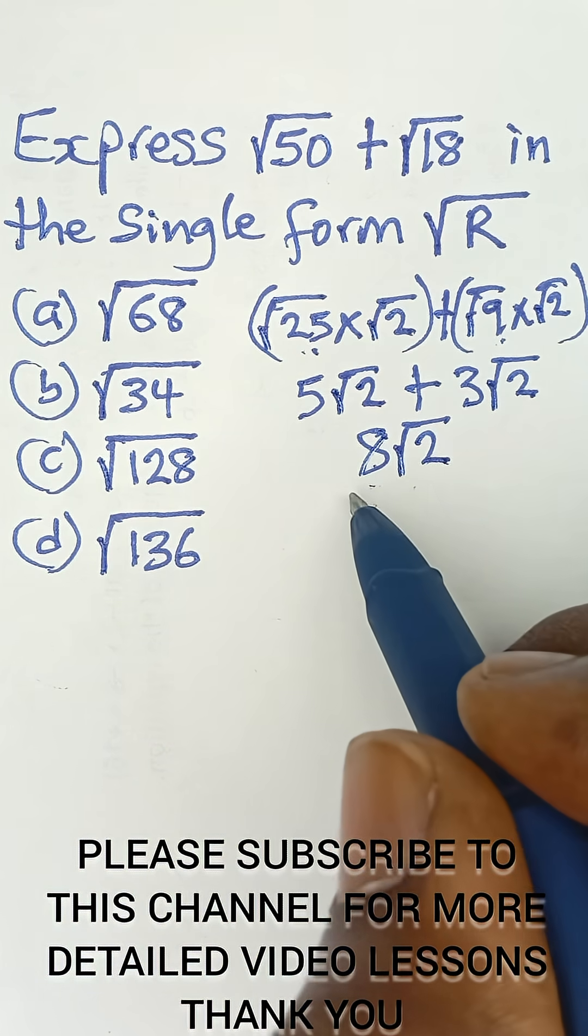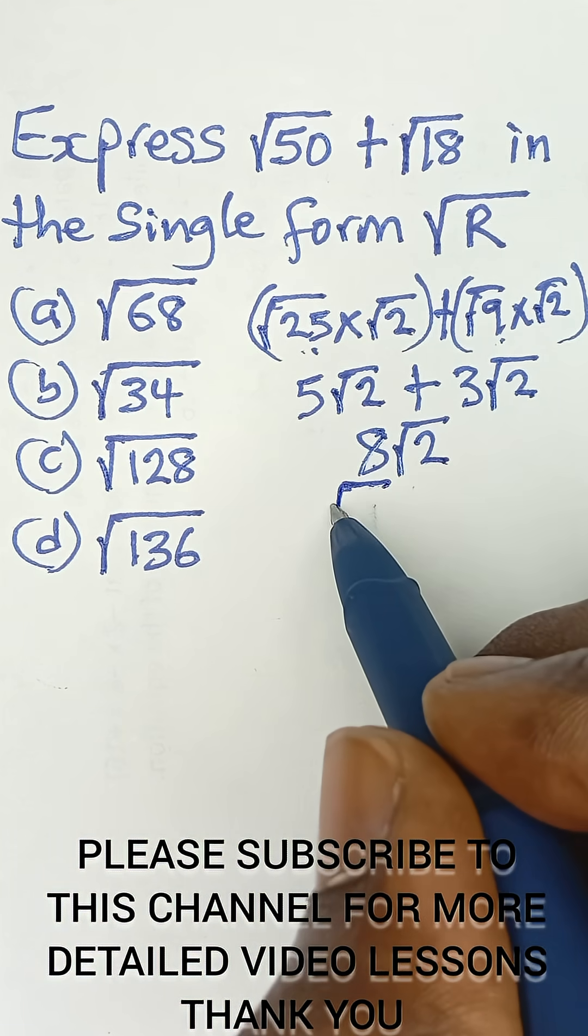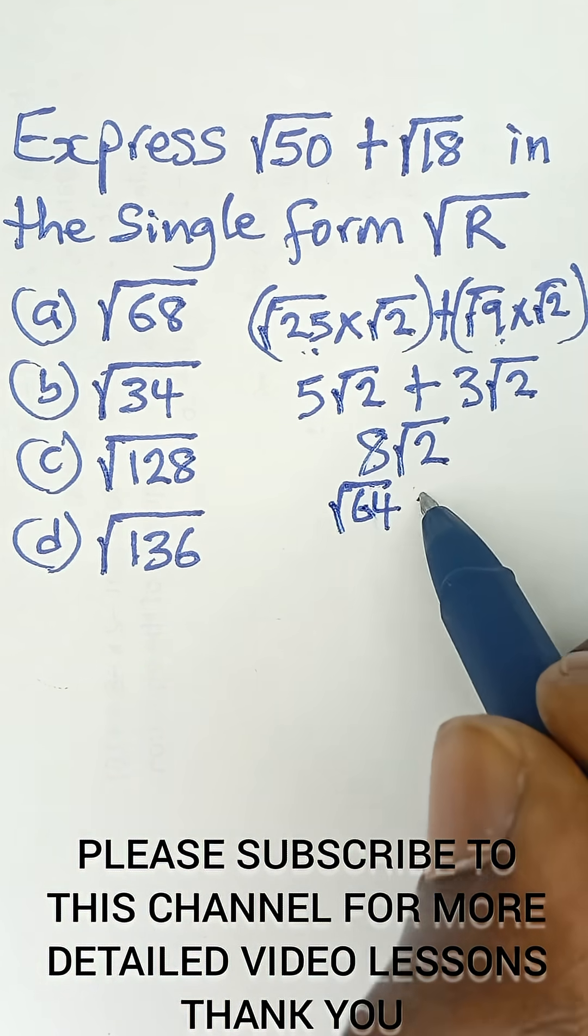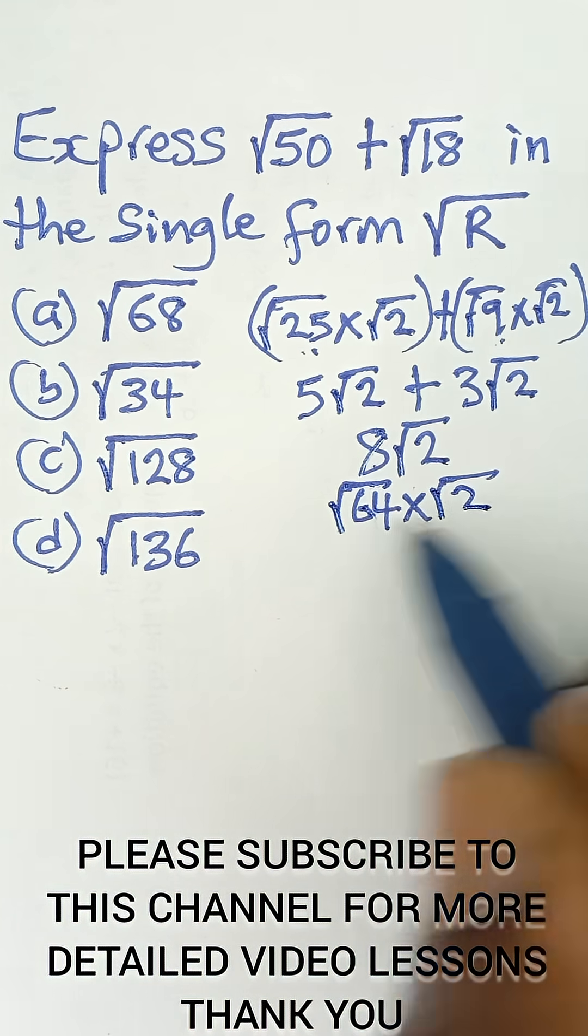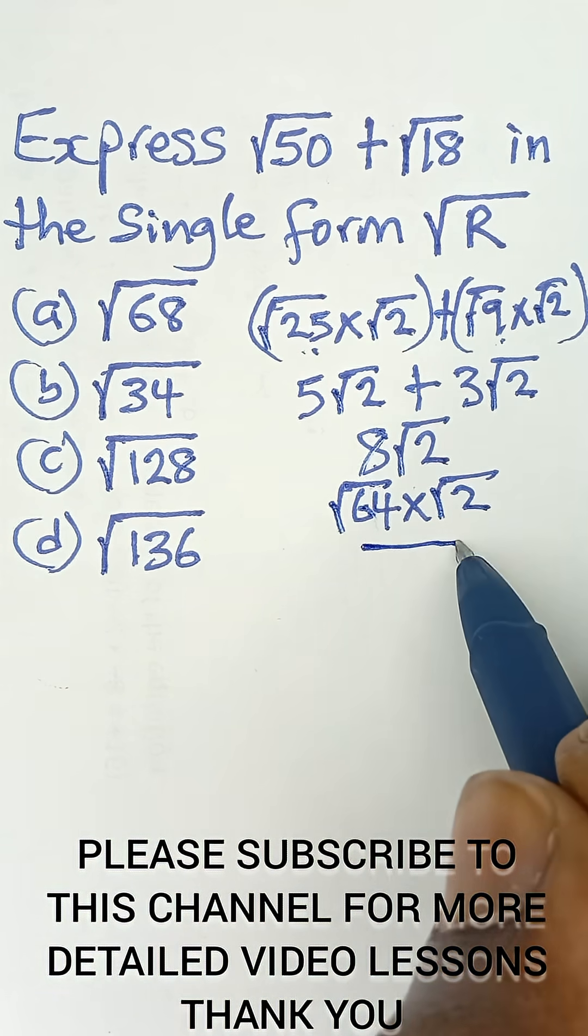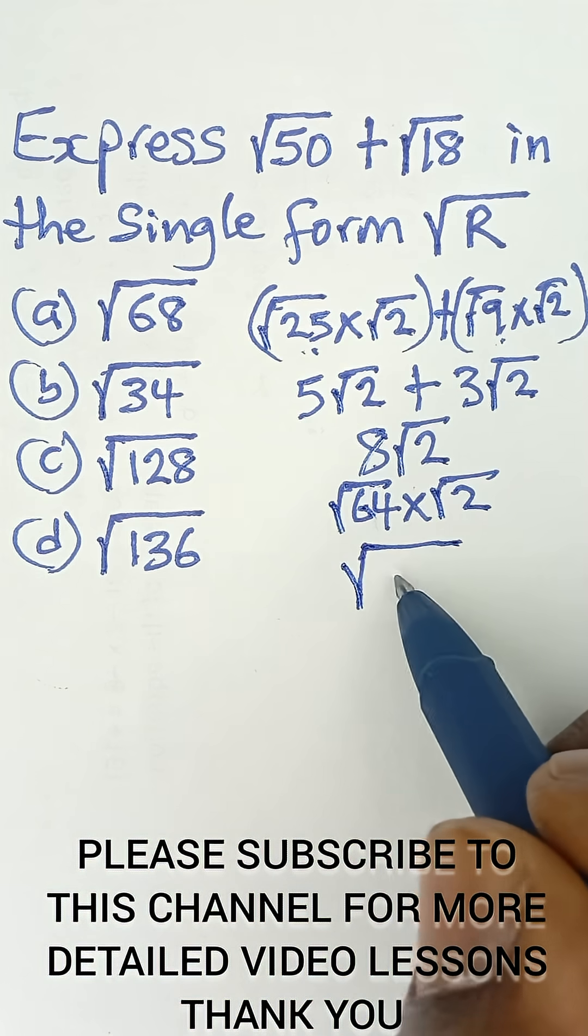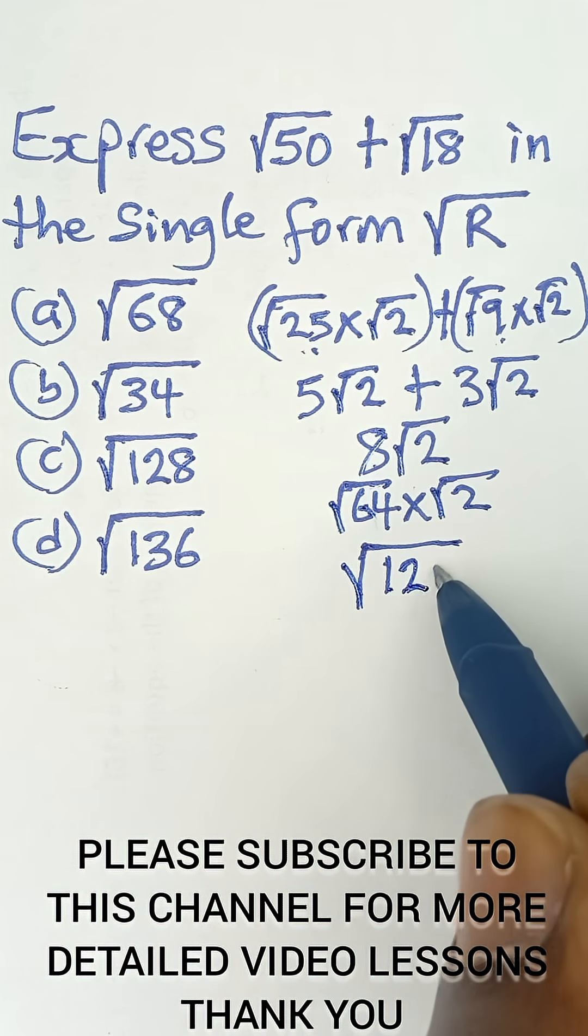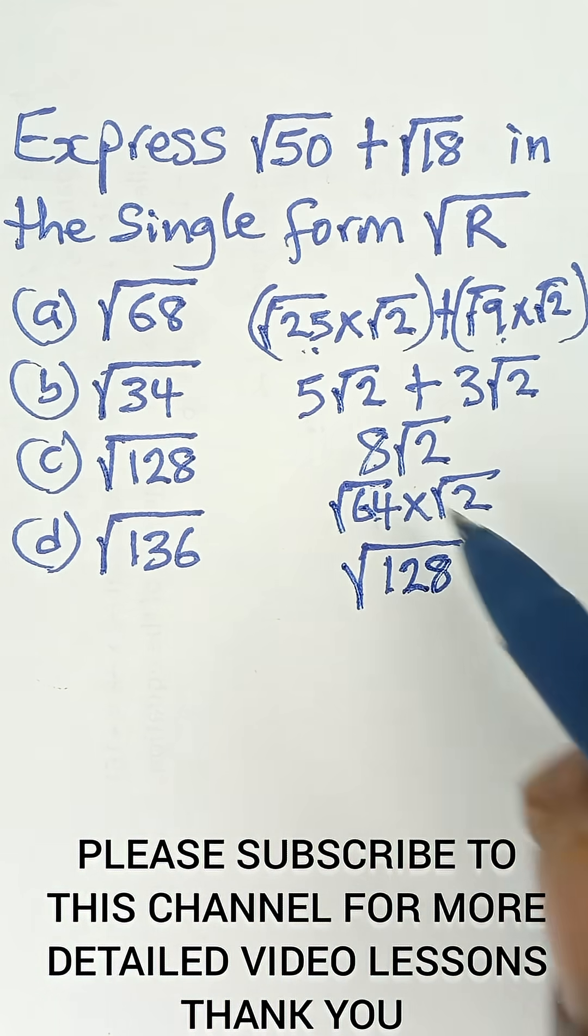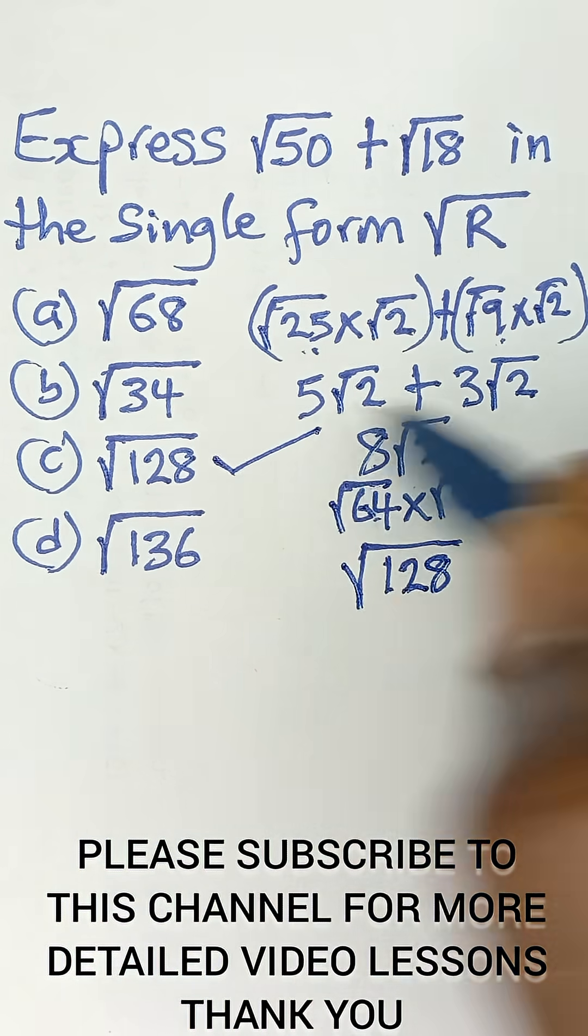8 squared is 64, so this becomes root 64. Root 64 will give us 8 multiplied by root 2, which will simply give us the square root of 128 when 64 multiplies 2. That gives us the final answer.